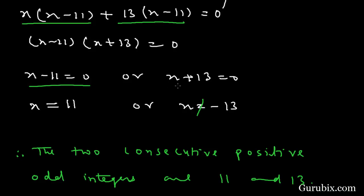This means x minus 11 is equal to 0 or x plus 13 is equal to 0. This means x is equal to 11 or x is equal to minus 13. But x is positive so x is not equal to negative 13.